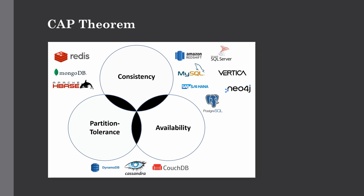There is a trade-off: the CAP theorem states you can only have two out of these three properties. When dealing with big data, partition tolerance is something we definitely need at any cost — we cannot trade it off. So you really have to choose between consistency and availability. Research shows you can only have two of them. In the CAP theorem triangle, relational databases like MySQL or SQL Server have consistency and high availability but lack partition tolerance, making them unsuitable for big data applications. For big data, partition tolerance is essential, so we must choose from the remaining two sides of the triangle.